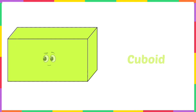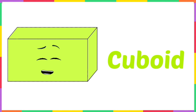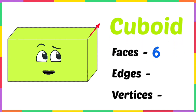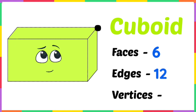Hi, I am a cuboid! I look like a box with rectangles all around. I am made up of six faces. This is my edge — I have 12 such edges. This is my vertex — I have eight such vertices.